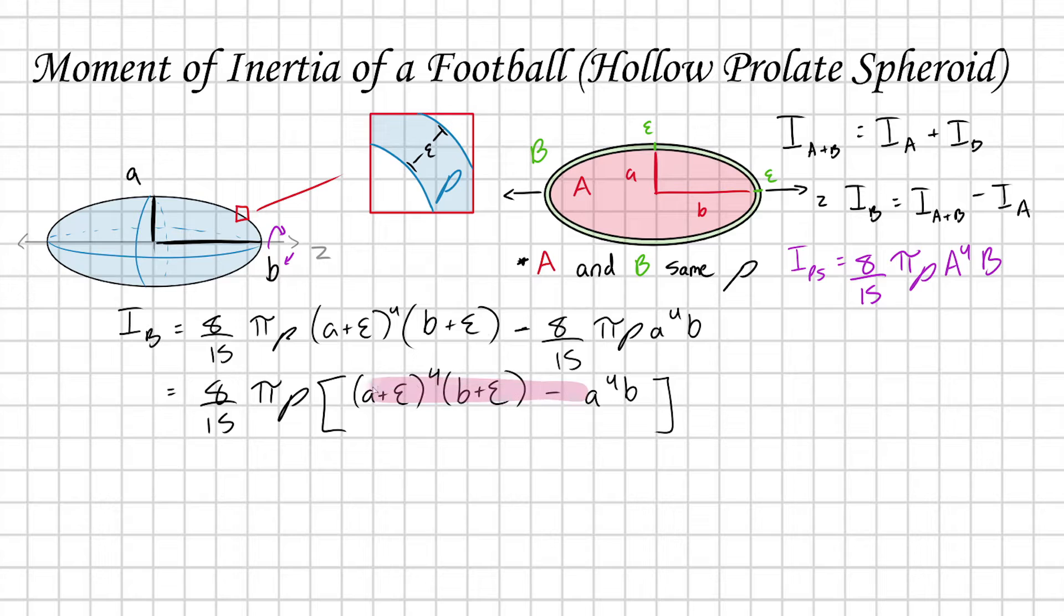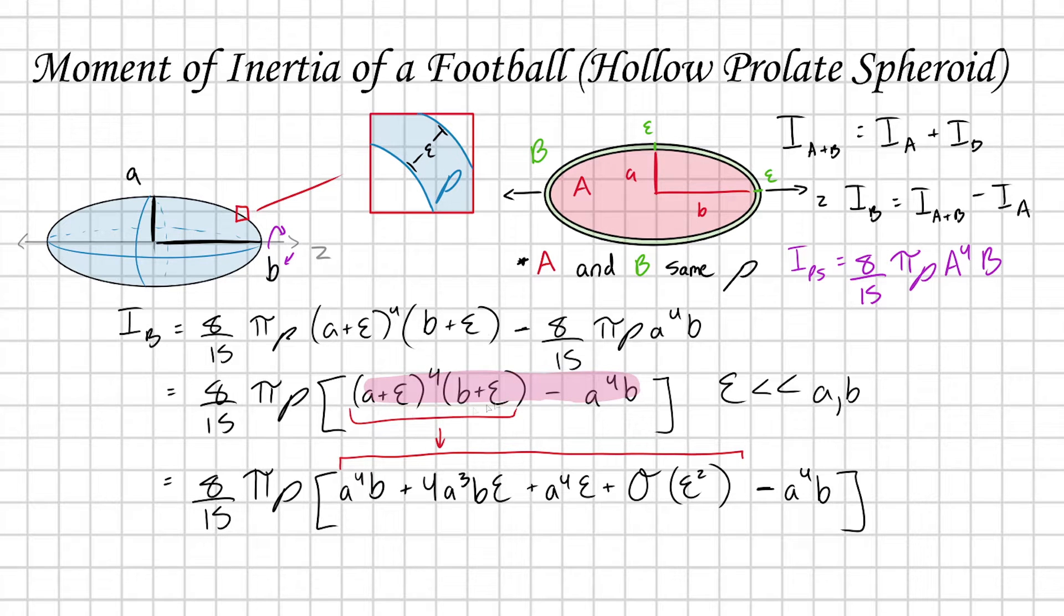We can simplify what's in the brackets a lot because we know that epsilon, this thickness parameter, is going to be significantly less than A or B. We have a very thin football. If we expand out what I've underlined in red, we have something to the 4th power, so it's tedious.